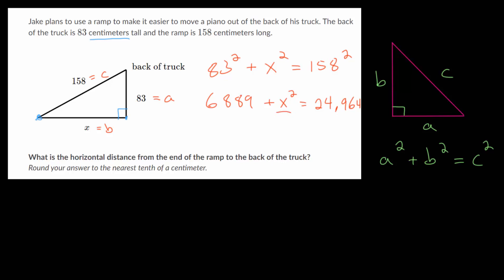So we need to solve this for x squared. So let's subtract this 6,889 on each side of the equation. And we get x squared by itself. So this x squared is now equal to 18,075.